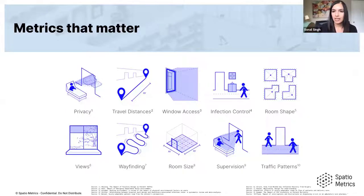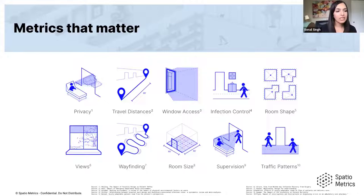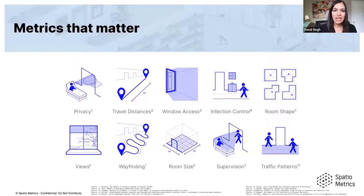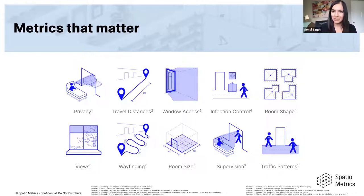What I'm actually going to focus on is an owner-centric set of curated metrics that capture the quantitative and qualitative aspects of a space — really the human factors of design. By automated design data, I mean automating the calculation of travel distances, access to daylight or windows, infection control, and metrics like privacy versus supervision, which are at odds — you can't have both simultaneously. These metrics have about 40 years of research behind them for driving building outcomes.